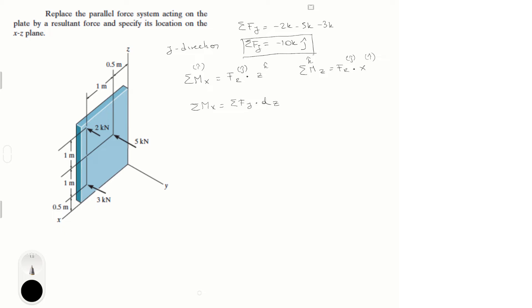and you know that sum of the moments in the x is equal to 2k times 2.5, that is this force right here, and the distance between this force and the x axis is 2.5, plus 5k times 1.5, which is this one and the distance between that and the x axis is 1.5,